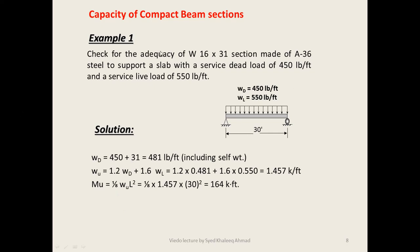Now let's look at Example 1: checking the adequacy of a W16×31 section made of A36 steel to support a slab with a service dead load of 450 lb/ft and a service live load of 550 lb/ft. Since this beam supports a slab, it is continuously laterally supported. The dead load is 450 lb/ft applied load plus 31 lb/ft self-weight, giving a total dead load of 481 lb/ft including self-weight.